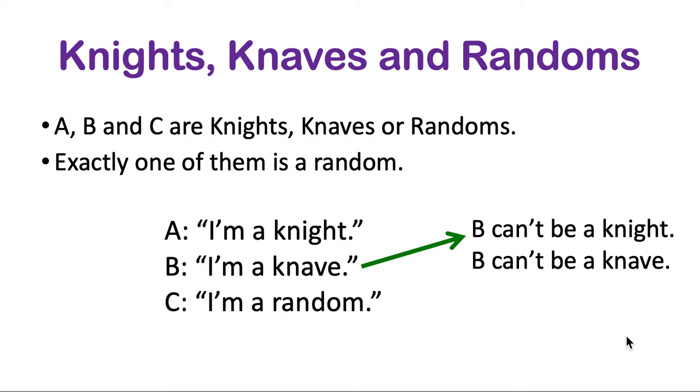Now, why don't you think forward now? Exactly one of them is a random, so now you know more information. Now, either A is a knight or a knave and C is a knight or a knave. So see if you can figure out what the rest of them are too, if you didn't get it beforehand.